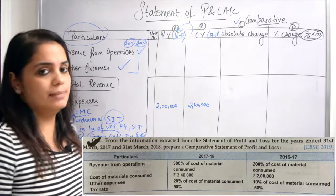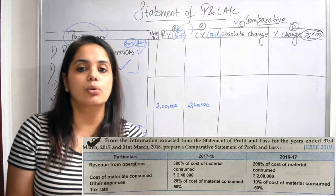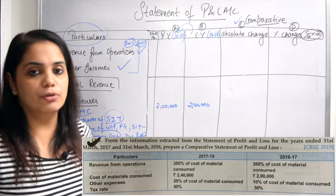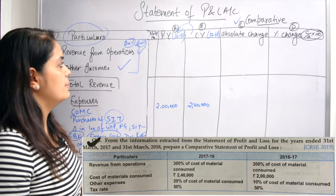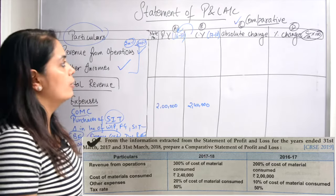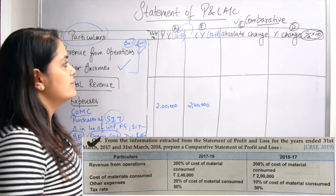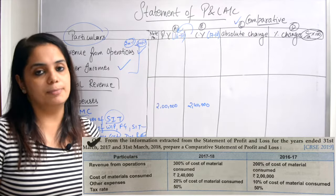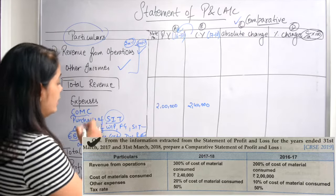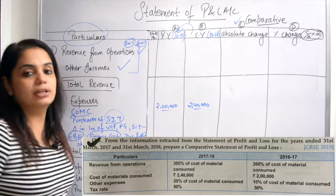I told you we will go through this quickly. The first thing is to write the whole format in rough work. Now the first item in the question is revenue from operations. Revenue from operations is given as 200% of cost of material consumed for the previous year, and 300% of cost of material consumed for the current year. Cost of material consumed is already given — we will write 2 lakhs and 2 lakhs 40,000.